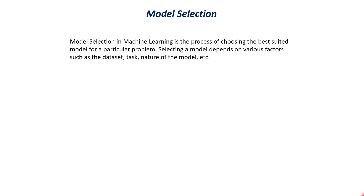So what is meant by model selection? Let's start with a formal definition. Model selection in machine learning is the process of choosing the best suited model for a particular problem. Selecting a model depends on various factors such as the dataset, task, and nature of the model.